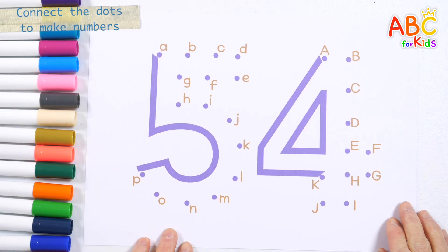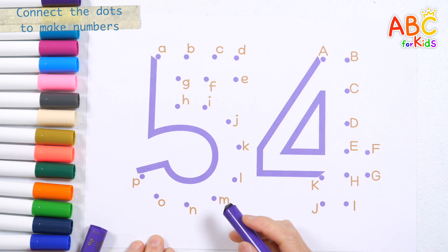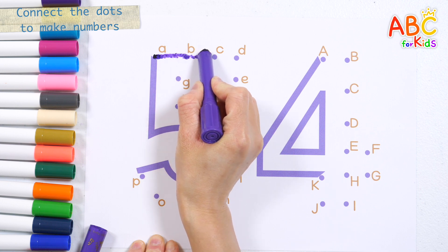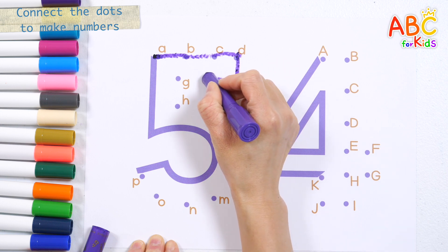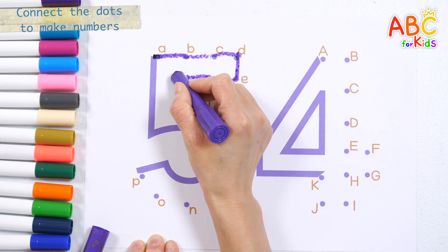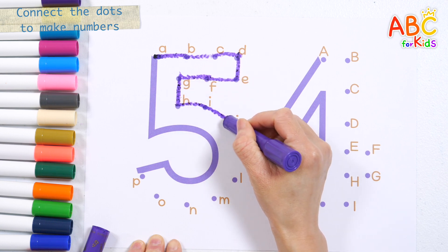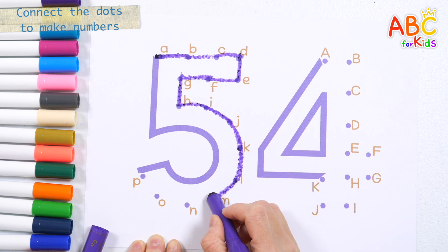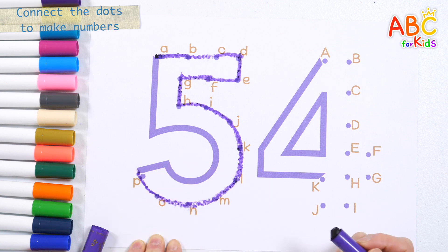Let's complete the numbers by connecting the dots in alphabetical order. Let's start with the lowercase letter A. Lowercase a, b, c, d, e, f, g, h, i, j, k, l, m, n, o, p. Very good!